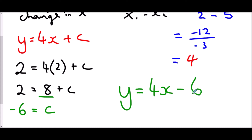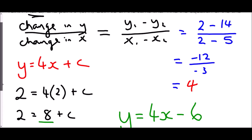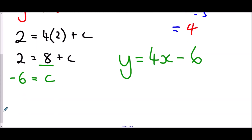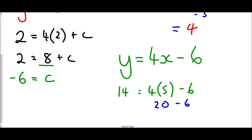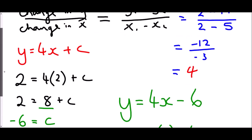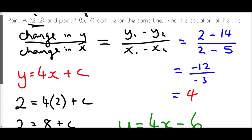We can check that works by using the second coordinate (5, 14). So: 14 equals 4 lots of 5 minus 6. 4 lots of 5 is 20, take away 6 is 14. They match, and therefore the equation works for both coordinates.